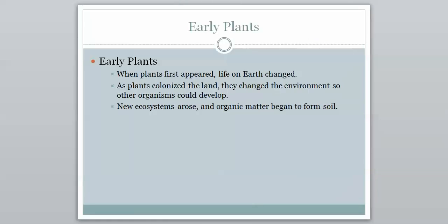Early plants. When plants first appeared, life on earth changed. As plants colonized the land, they changed the environment so other organisms could develop. New ecosystems arose, and organic matter began to form soil. Plants take in the carbon dioxide that we breathe out, and they breathe out oxygen that we breathe in. That's just one example of how plants allowed almost all of life to develop, because almost all of life today requires oxygen, and plants gave us our oxygen.